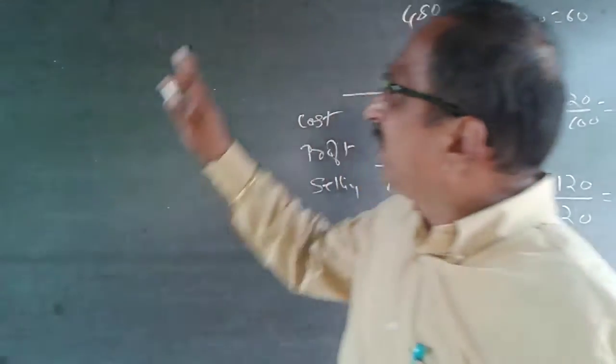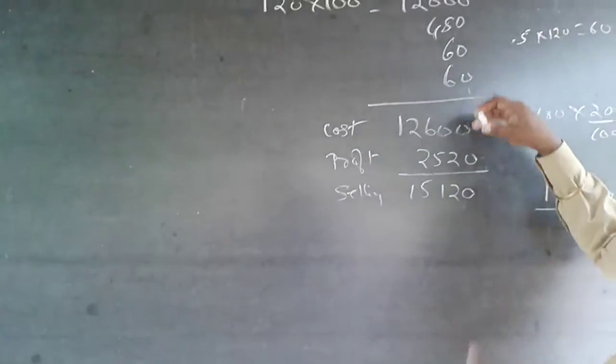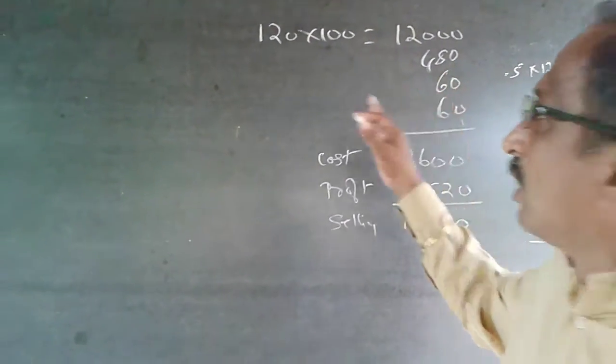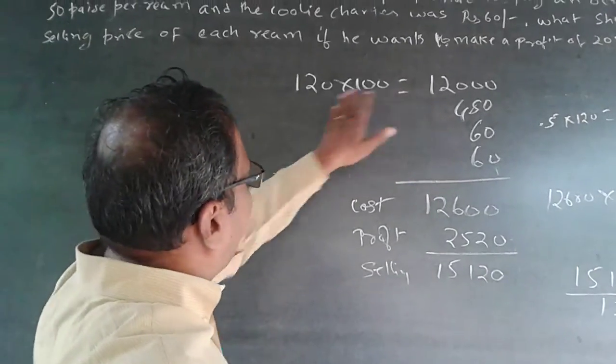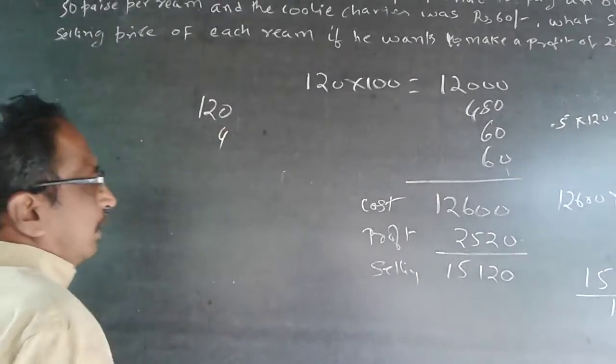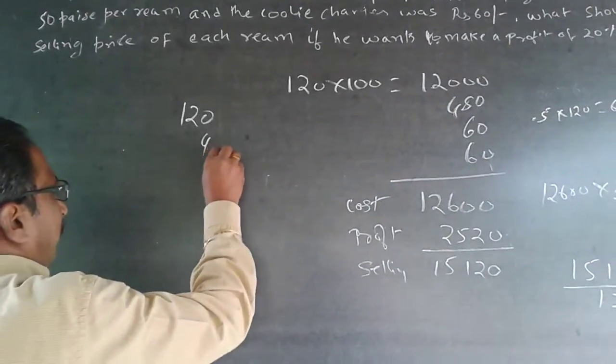You can also convert everything into a single ream. Convert this, convert this, convert this. Again, depends on how fast you are. For example, 120, then 480 divided by 120 will be 4 rupees, 60 paise is 0.5, another 60 paise, so you will make it as 0.5 and 0.5.